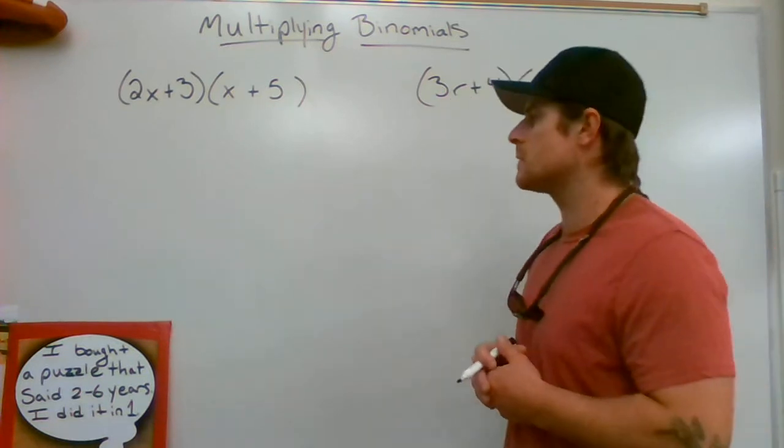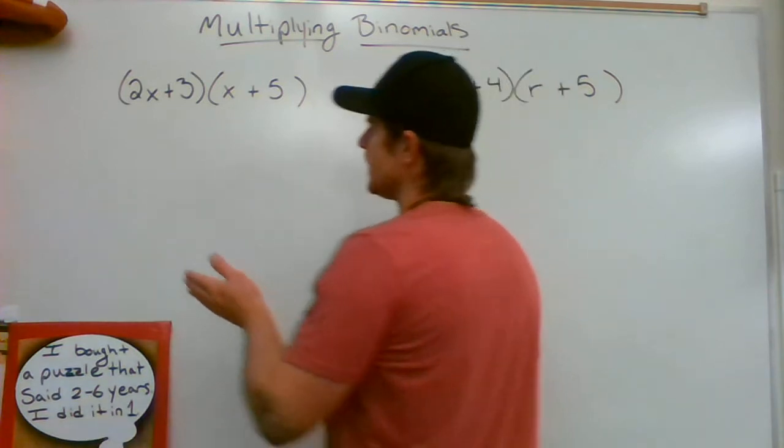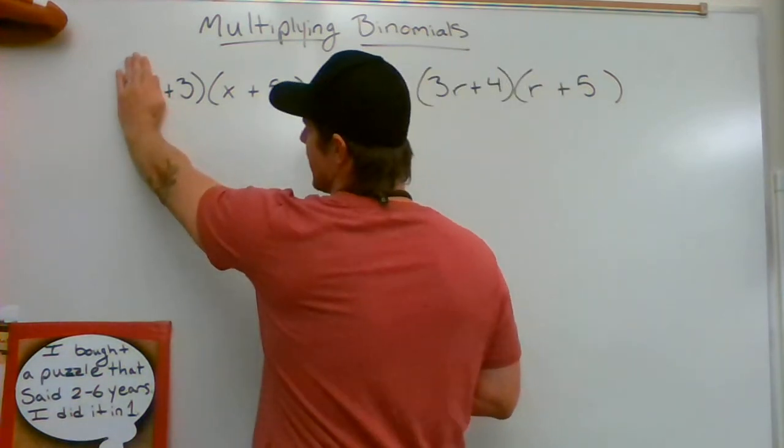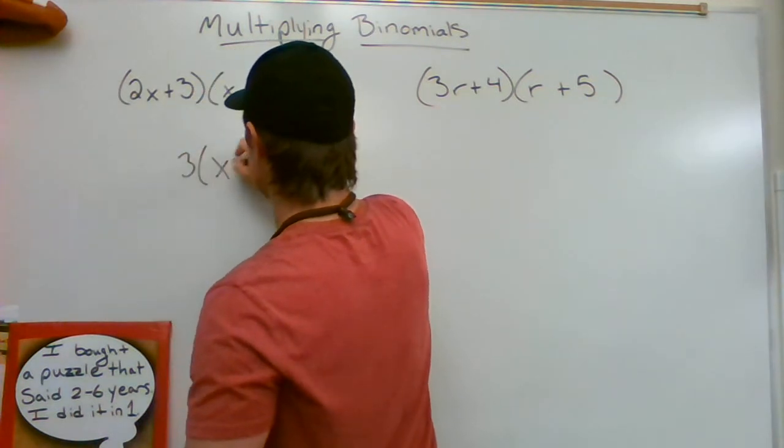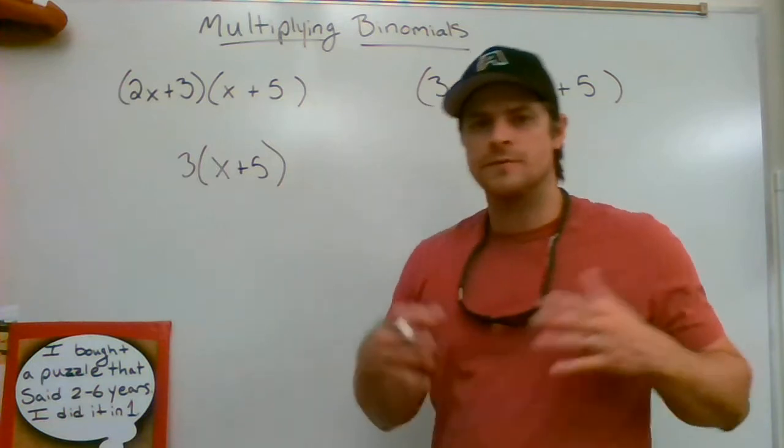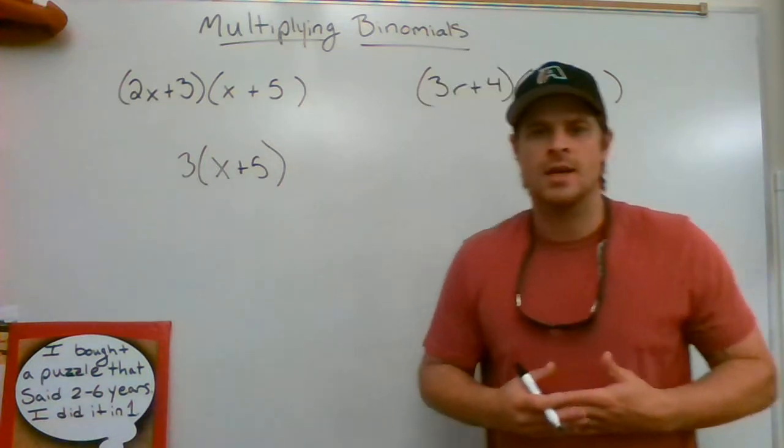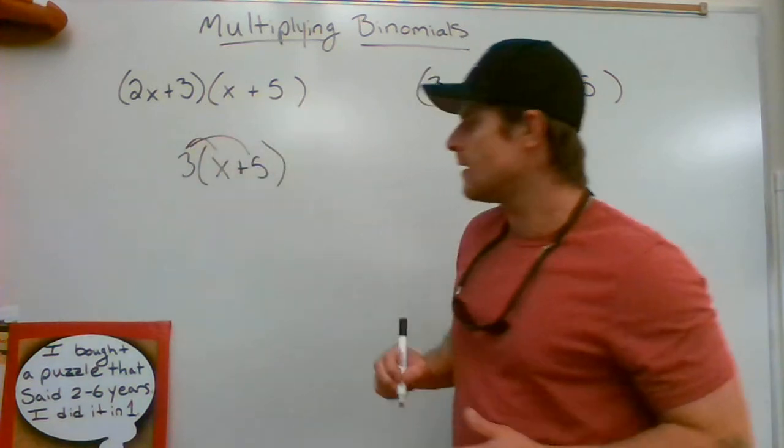In this video I'm going to show you how to use the distributive property. We have 2x plus 3. If I removed that 2x, this would really just be 3 times (x + 5). This is not a problem for most of you by now in your algebra class—you know that 3 needs to be distributed to both terms on the inside.